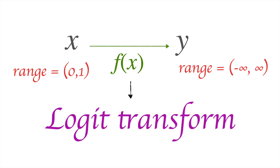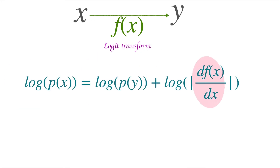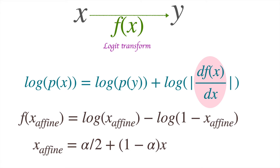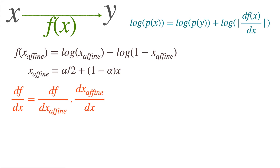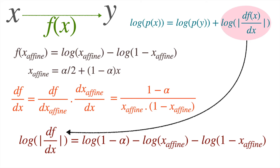Now, given a Logit Transform mapping variable X to Y, we want to know the relationship between their probability densities. We evaluate df/dx using the chain rule in two steps: first, f as an affine function, and second, x_affine as a function of X. This gives df/dx = (1 - alpha) divided by (x_affine times (1 - x_affine)). Taking log on both sides gives us an expression relating log P(X) and log P(Y).